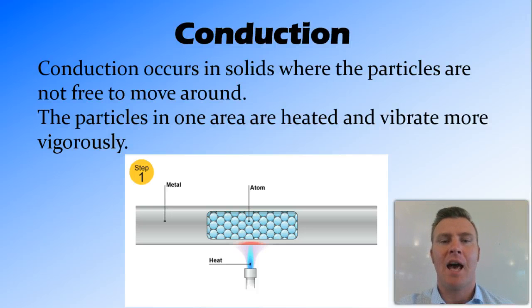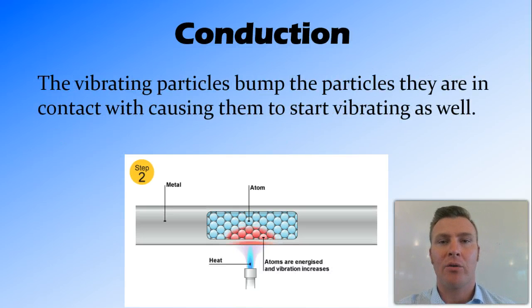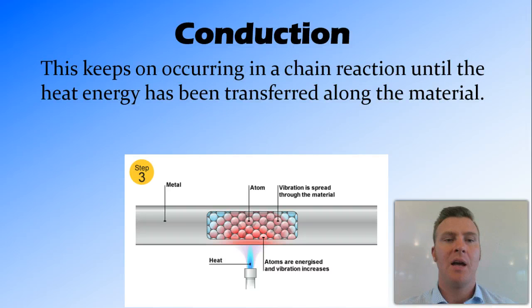Conduction is a form of heat transfer that occurs in solids where the particles aren't free to move around, so convection wouldn't work. In conduction, the place in which the solid is being heated, that heat transfers to the particles and causes them to vibrate more vigorously or quickly. They get hotter and hotter and vibrate faster and faster, and then they bump into the particles next to them causing those particles to bump faster and faster and start vibrating as well. This causes a chain reaction where eventually you have a whole heap of particles in an area that are vibrating really quickly. And this can cause heat to be transferred through a solid material, for example, metal.